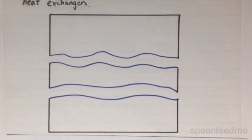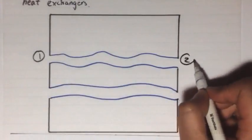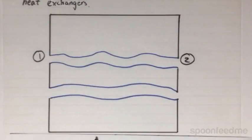with two pipes running through it, here and here. One pipe enters at state 1 here and exits at state 2 here, and contains one of the fluids.